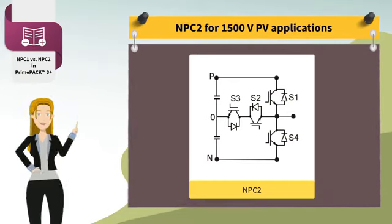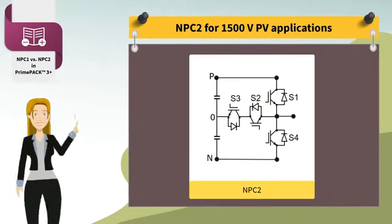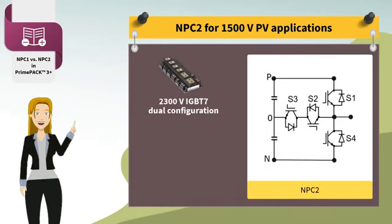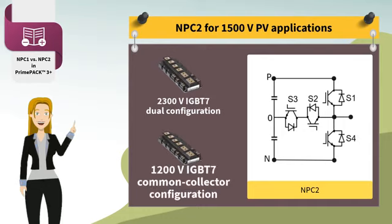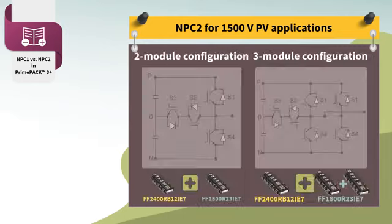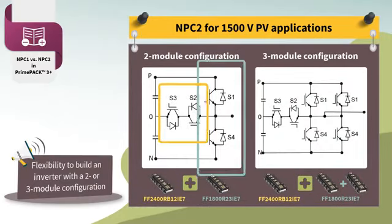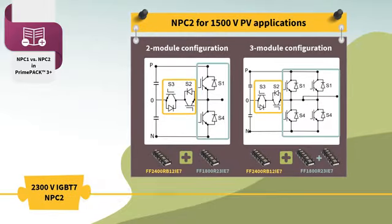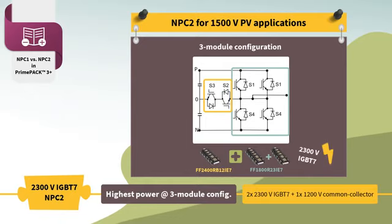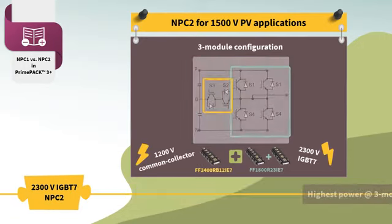To address NPC2 topologies for the 1500V PV applications, Infineon has developed two modules: one with a 2300V IGBT-7 chip in a dual configuration and another with a 1200V IGBT-7 chip in a common collector configuration. This gives you the flexibility to build an inverter with a 2 or 3-module configuration. However, the highest power level can only be achieved in a 3-module configuration, which requires two 2300V IGBT modules and one 1200V common collector module.